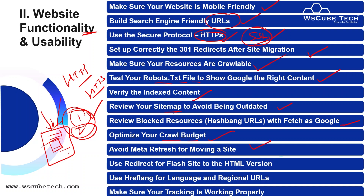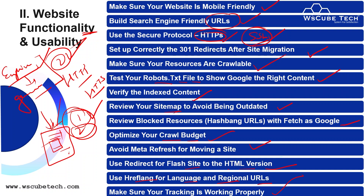We avoid meta refresh for moving a site, use redirects for Flash sites to HTML versions, and use hreflang for different languages and regional URLs. For example, if your website is in English and you want a German version with the same content, not using hreflang could cause Google to treat them as two separate sites with duplicate content. With technical SEO, we can resolve this. We also make sure tracking is working properly to monitor every activity.